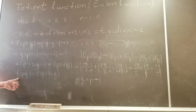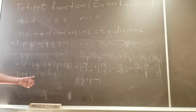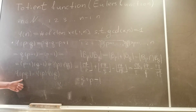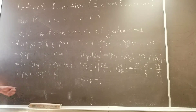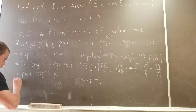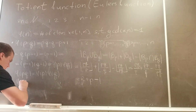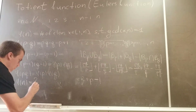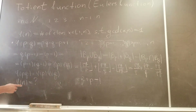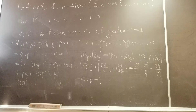In other words, we just discovered that φ(p·q) = φ(p)·φ(q). So the Euler totient function is a multiplicative function for p times q. We will use this result to write φ(n) as a formula in terms of n. Thank you.